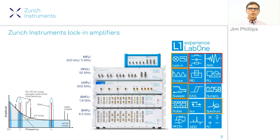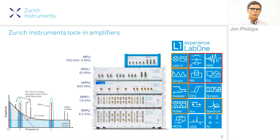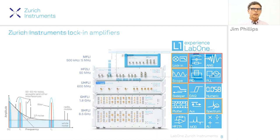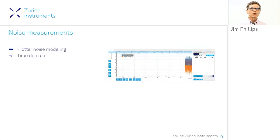We can also offer additional optional tools: an arbitrary waveform generator, a feedback system based on proportional-integral-differential control, or a phase-locked loop. These tools make the digital lock-in amplifier a rather premium device for signal processing.